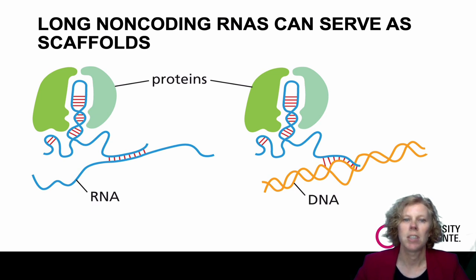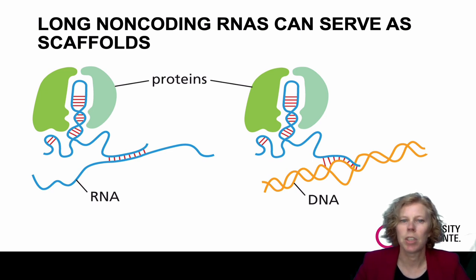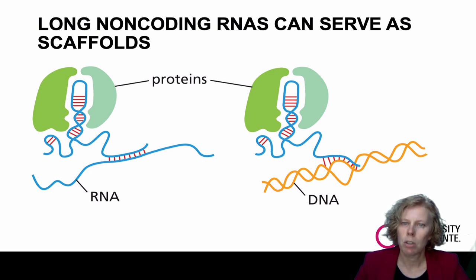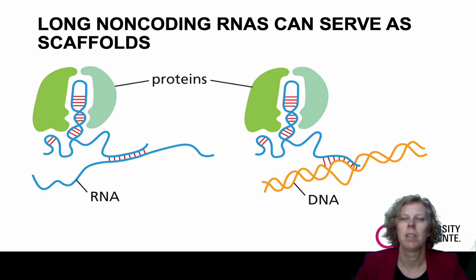One long non-coding RNA is X-cist, which is 17,000 nucleotides long, expressed in female cells, and plays a role in X-chromosome inactivation in females. As described in Chapter 7, RNAs can fold into three-dimensional structures that can be recognized by specific proteins. By engaging in complementary base pairing with other RNA molecules, these long non-coding RNAs can, in principle, localize proteins to specific sequences in RNA or DNA molecules. In the case of X-cist, enzymes and chromatin remodeling complexes are attracted that promote the formation of highly condensed heterochromatin, thereby silencing the genes of the second X chromosome in females.